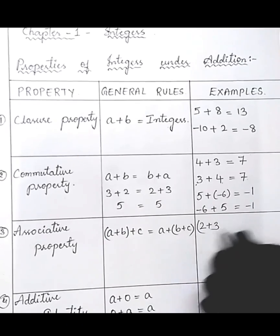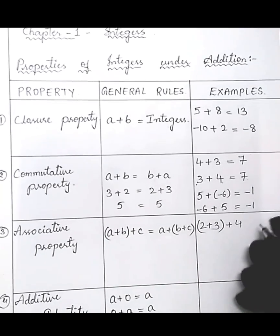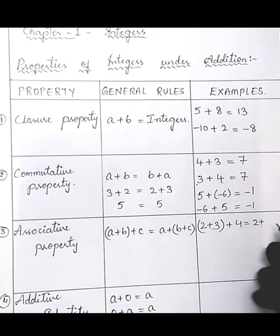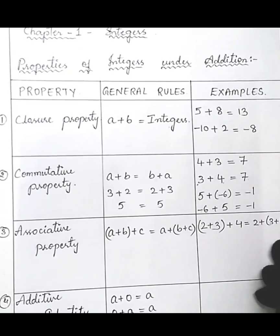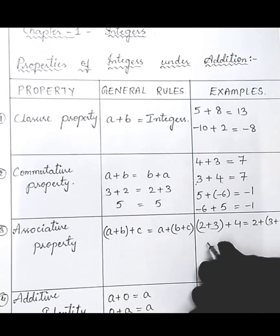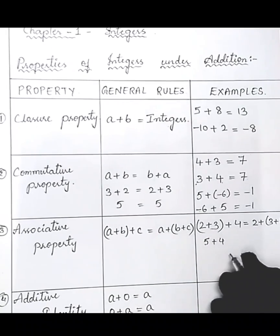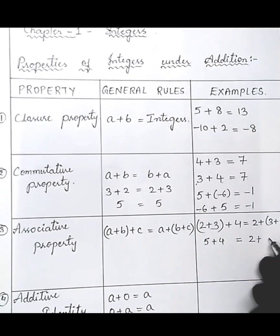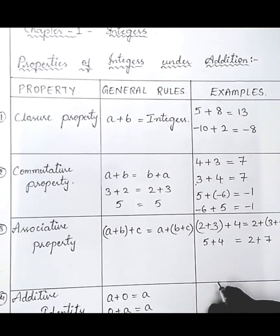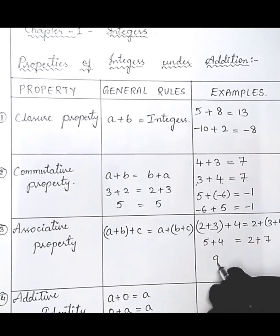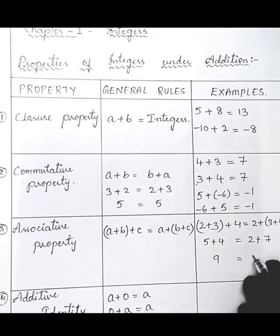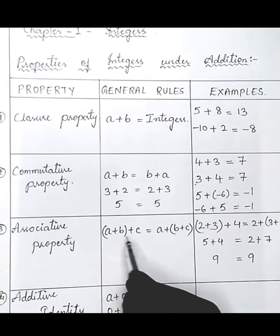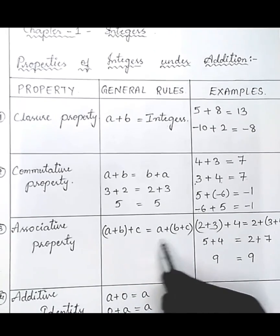Let's understand this with an example: two plus three plus four, or two plus three plus four. Two plus three equals five, then five plus four equals nine. On the other hand, three plus four equals seven, and seven plus two is also nine. So associative property explains that a plus b plus c equals a plus b plus c.